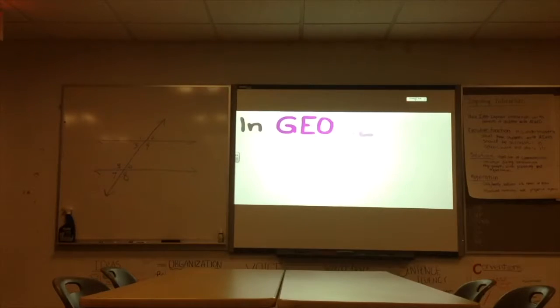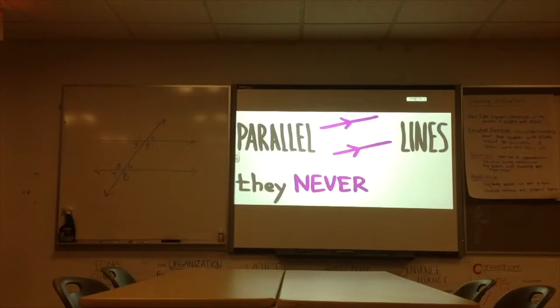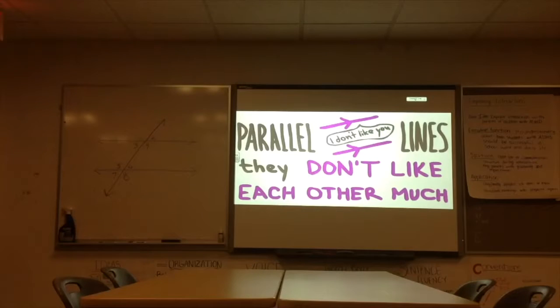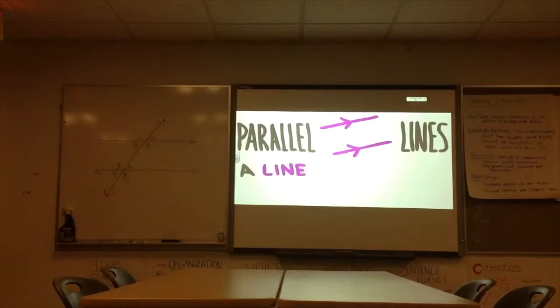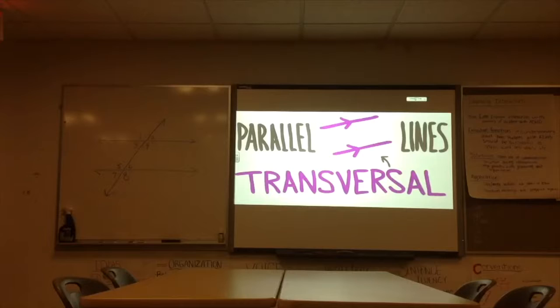In geometry, if you want to fare well, you need to know the parallel lines. They never touch. They're always the same distance apart. It's as if they don't like each other much. And there's only one thing that may come between them. Yes, a line that passes right through each of them. It's called a transversal and it has several angle properties just like these.